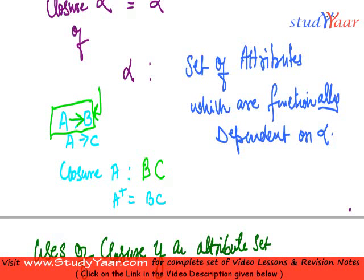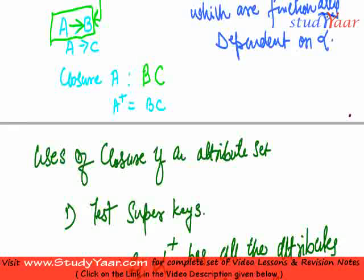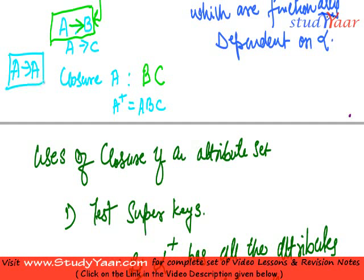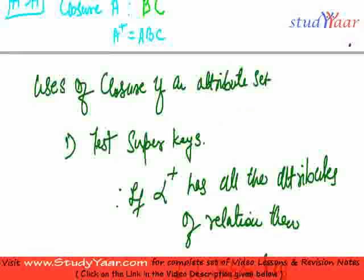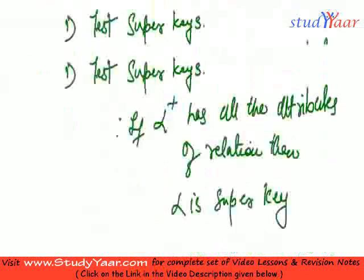Just remember, when I talk about set of attributes which are functionally dependent on alpha, then this set of attributes would contain alpha as well. So my closure here would be, it is also going to contain A. Why? Because obviously A determines A, that is a trivial dependency. It is very obvious that A determines A. Hence, we also have A in the closure of A.